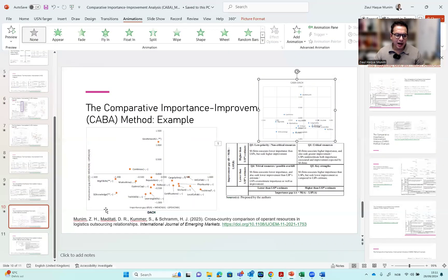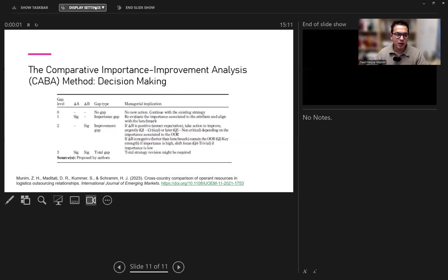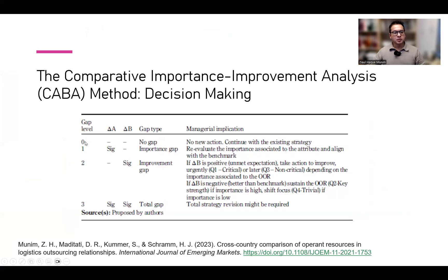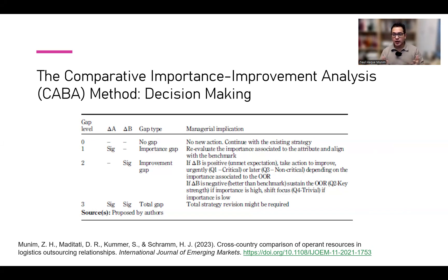One last thing is how we really use this quadrant for decision making. We can use this proposed framework here. One level could be no gap - there is no gap in importance and no gap in improvement, so the two parties are aligned and nothing should be done. This applies regardless of context - whether it's manufacturers and logistics performance, a hospital context with doctors and patients, or an organization looking at employer and employee perspectives - if there is no gap, no action is needed.